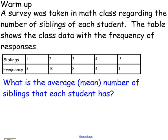Okay so here's a warm up. I think you should be able to do this. We covered something like this in our class when we were reviewing for our last final. It says a survey was taken in math class regarding the number of siblings of each student. The table shows the class data with the frequency of responses. What is the average or the mean number of siblings that each student has?